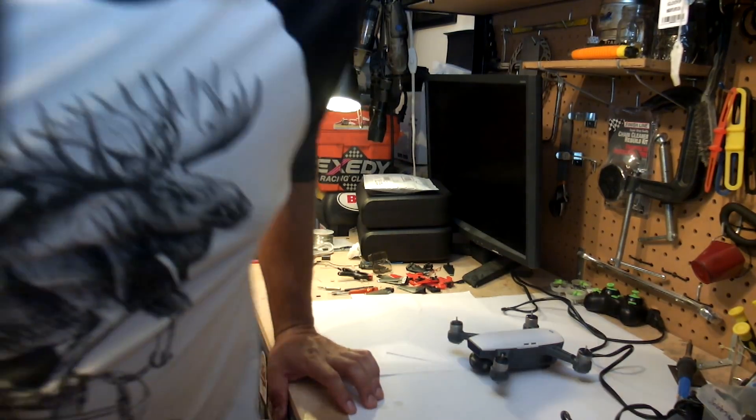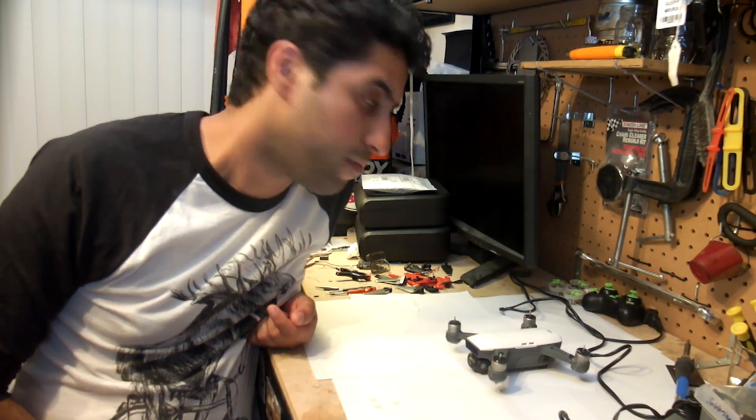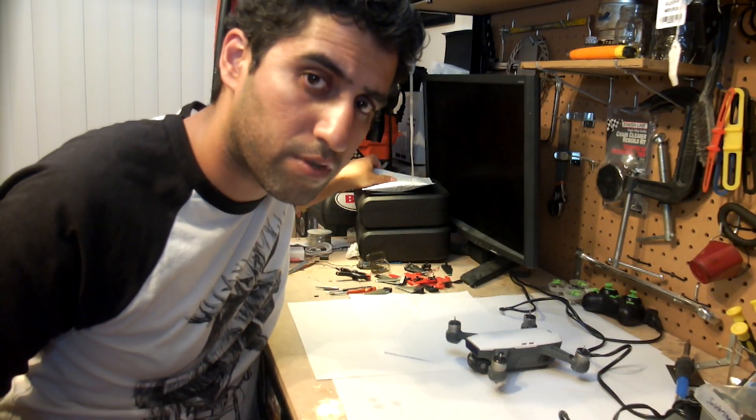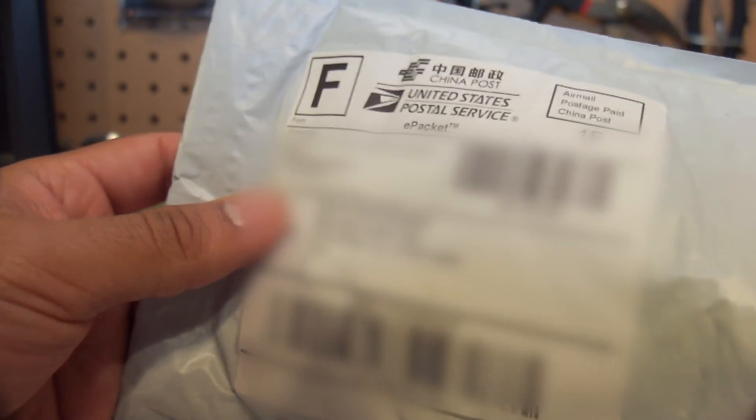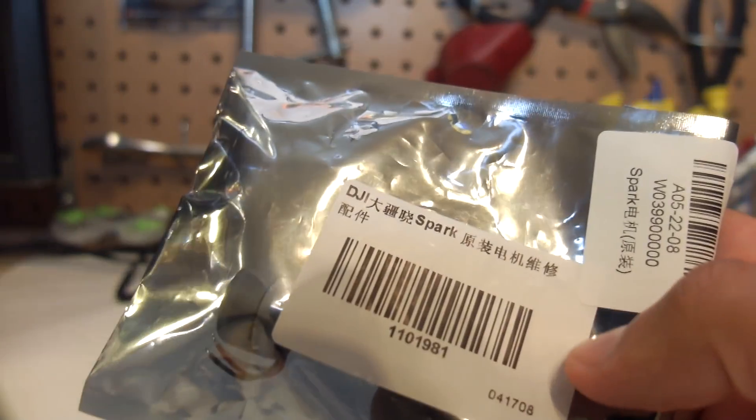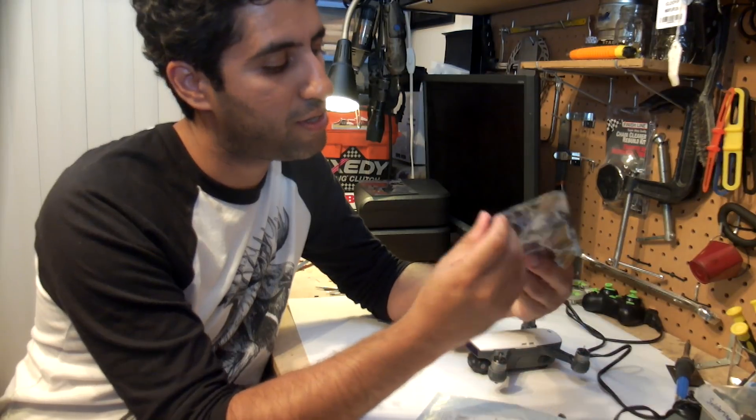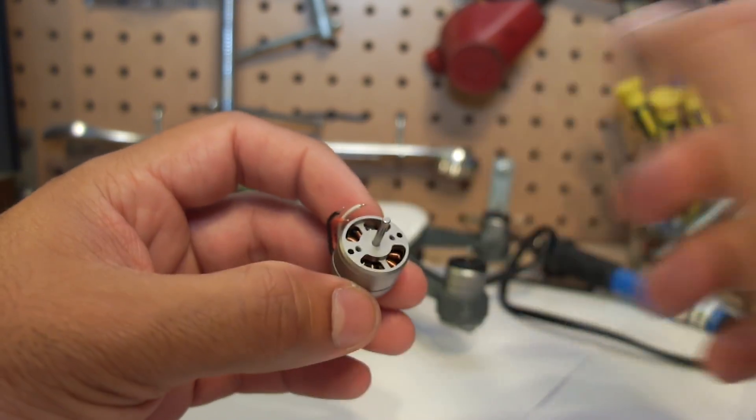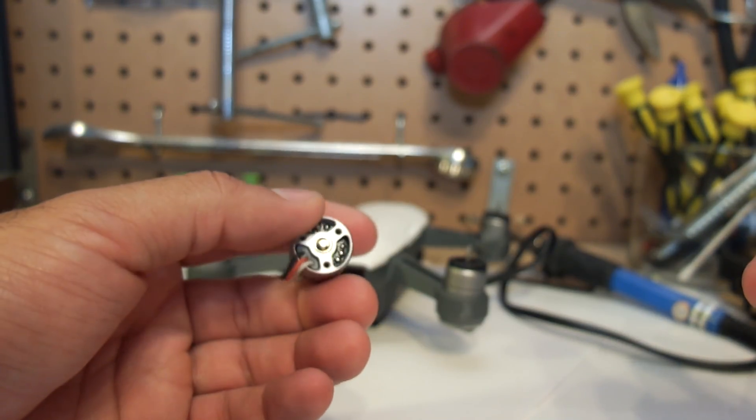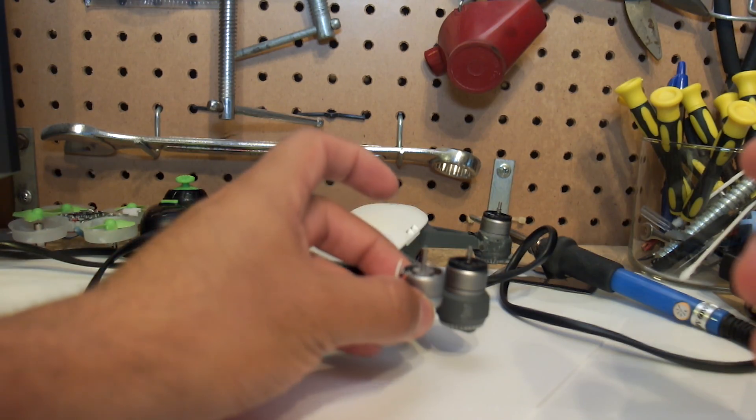GoPro start recording. Today is a very exciting day. Why? Because I've got a package that I've been waiting for nearly a month. Here it is. What's inside here is the motor for my DJI Spark. Take a look at that. Brand new Spark motor. This is to replace the damaged motor. It looks just like the motors that are in the Spark. Now I'm going to show you how it works.